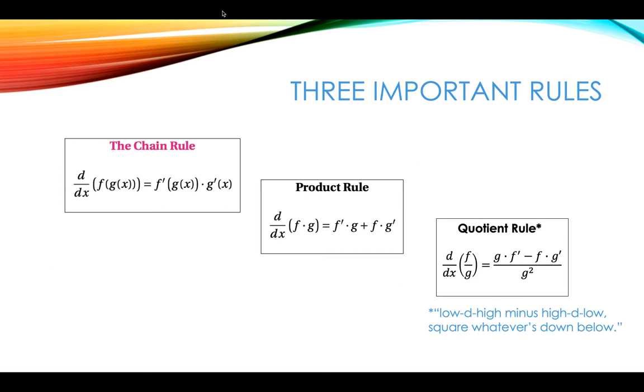You'll recall one of the rules from last time, the chain rule. The derivative of the composition f of g of x is equal to f prime of g of x times g prime of x. The product rule is when you have two functions multiplied together. So f and g are multiplied together and the derivative of f times g is going to equal f prime times g plus f times g prime.